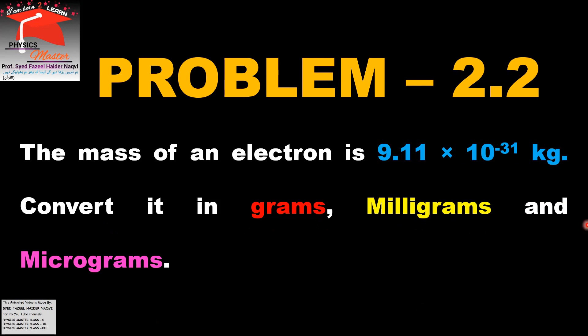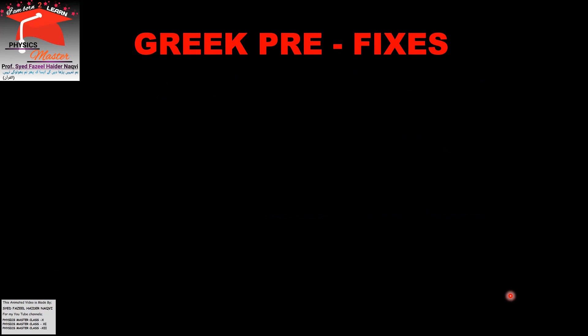In this problem, the mass of an electron is given in kilograms and we will convert it into three different units. Before converting any unit to another unit, you need to memorize the table of prefixes. What prefixes are, we have already explained in Lecture Number 6. If you don't know the prefixes, go ahead and listen to that lecture. Prefixes are of two types: Greek prefixes and Latin prefixes.